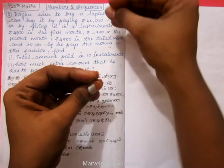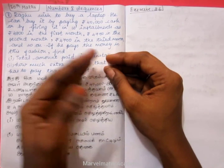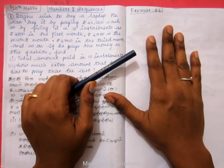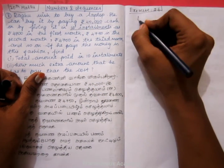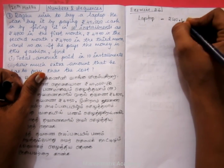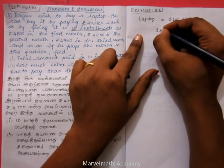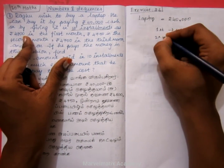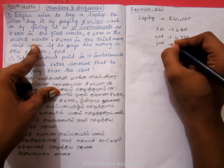So here we also have the option to pay in installments — EMI. We will pay for 10 months. When you pay ready cash, you pay 40,000. The first installment amount is 4,800. The second installment is 4,750. The third installment is 4,700.